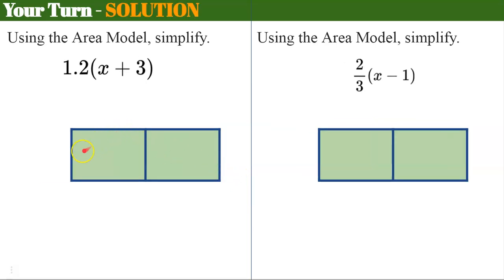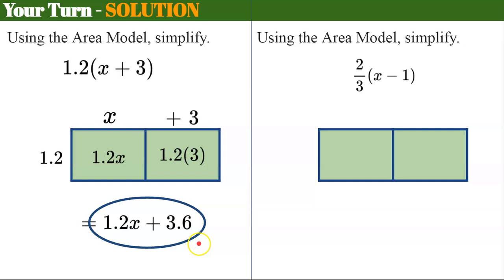Welcome back. So let's set these up. 1.2 and then my x and my positive 3. 1.2 times x is 1.2x. 1.2 multiplied by 3 is 3.6. I just did that here. Let's do the math now. 3.6 goes down here. So 1.2x plus 3.6 is in simplest form.